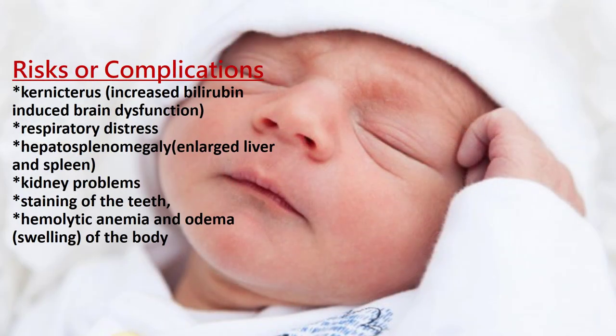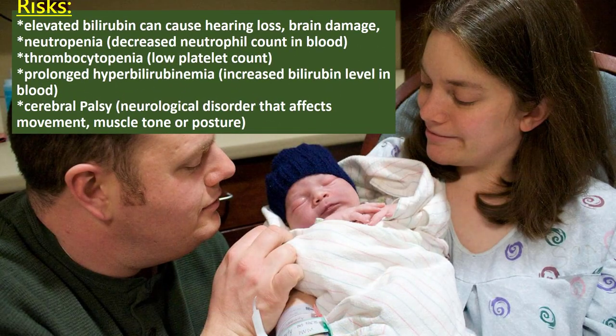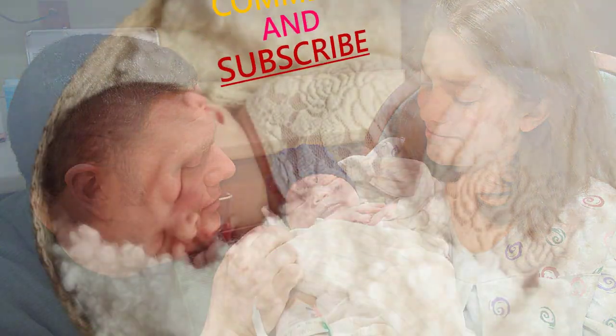Complications: Kernicterus, respiratory distress, hepatosplenomegaly, kidney problems, staining of the teeth, hemolytic anemia, and edema of the body. Elevated bilirubin can cause hearing loss, brain damage, neutropenia, thrombocytopenia, and cerebral palsy.